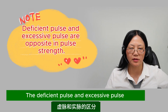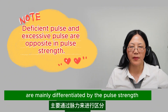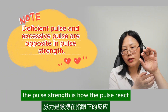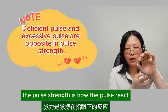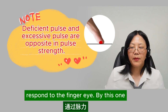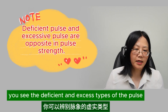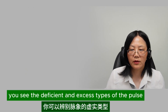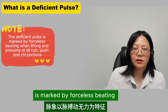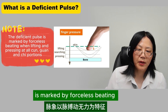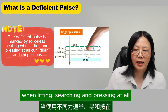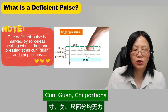The deficient pulse and excessive pulse are mainly differentiated by the pulse strength. The pulse strength is how the pulse reacts and responds to the finger. By this, you see the deficient and excess type of the pulse. The deficient pulse is marked by forceless beating when lifting, searching, and pressing at all cun guan chi portions.